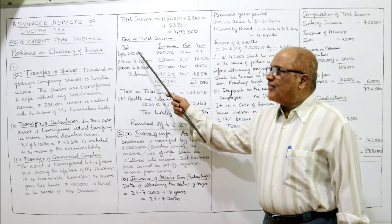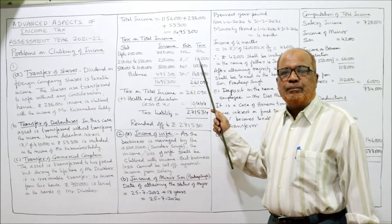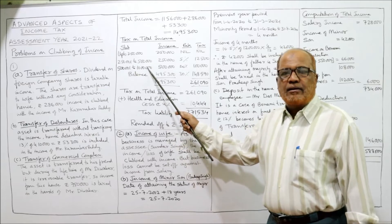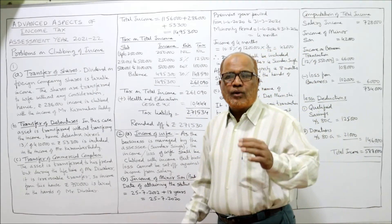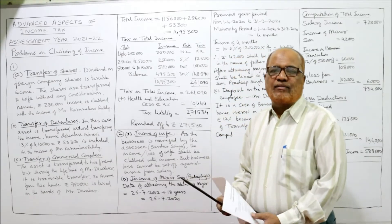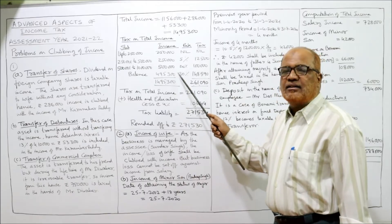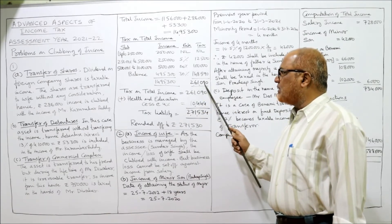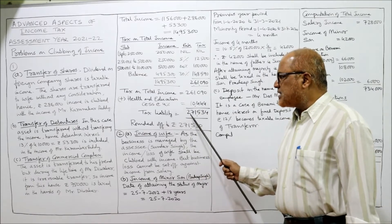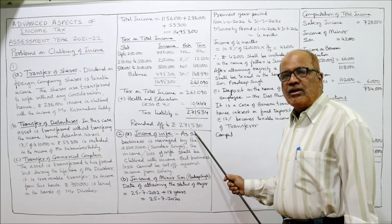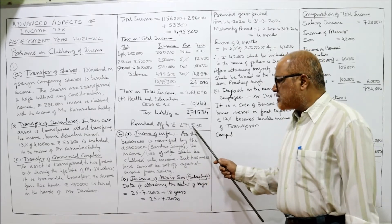Tax liability is computed using the slab system. Up to ₹2,50,000: nil. From ₹2,50,001 to ₹5,00,000 (₹2,50,000): 5% = ₹12,500. From ₹5,00,001 to ₹10,00,000 (₹5,00,000): 20% = ₹1,00,000. Balance over ₹10,00,000: ₹14,95,300 − ₹10,00,000 = ₹4,95,300 at 30% = ₹1,48,590. Total tax = ₹2,61,090. Add health and education cess at 4%: total tax liability = ₹2,71,534, rounded off to ₹2,71,530.